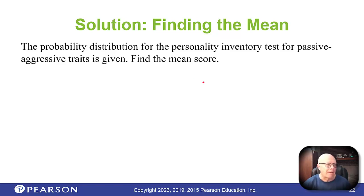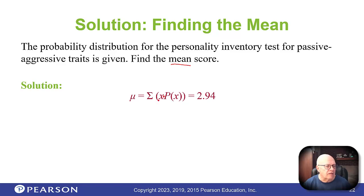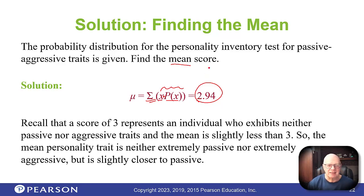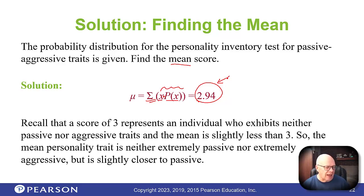To recap: to get the mean score, take each value times its probability, add up all those products, and there's your mean score. Remember, three means you're neither passive nor aggressive. A mean of 2.94 means employees are slightly passive — and in fact, it's probably not significantly different from three. We can explore that in another chapter.